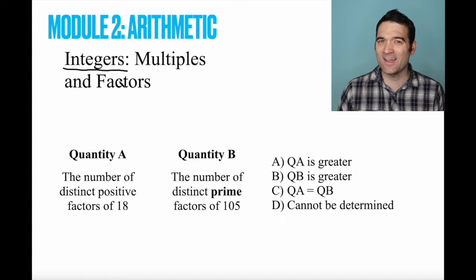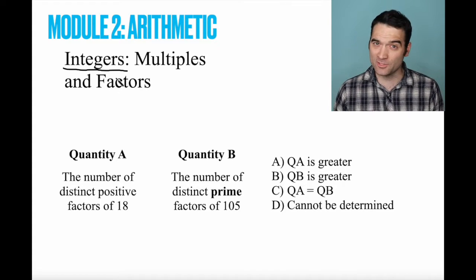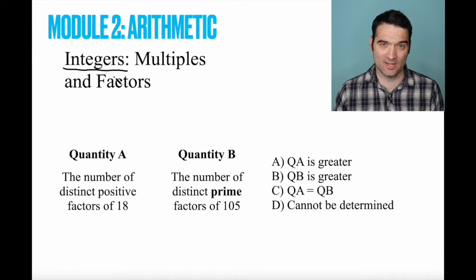An integer is a non-decimal number. So, for instance, 1, 2, a billion, negative 7, and 0 are all integers. 1.5, negative 3.8, those are not integers.